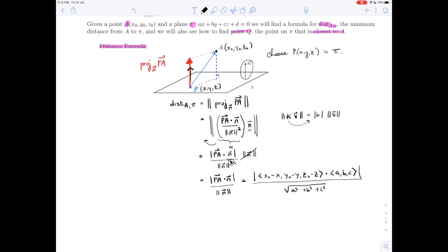If we expand the dot product, we're going to have absolute value of A times x0 minus Ax plus B times y0 minus By plus C times z0 minus Cz, in absolute value, divided by the square root of A squared plus B squared plus C squared. That looks like a bit of a monstrosity in the numerator. We can clean that up even more.